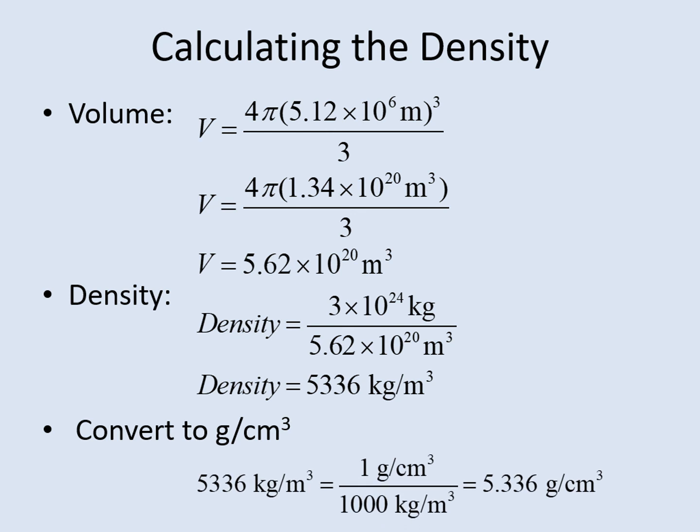Finally, we convert the density to grams per cubic centimeter by multiplying by 1 gram per cubic centimeter divided by 1,000 kilograms per cubic meter.